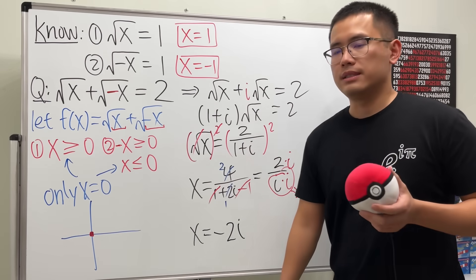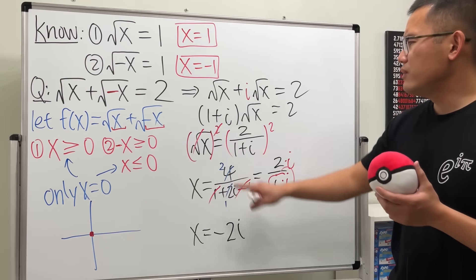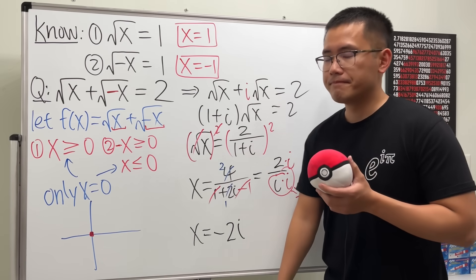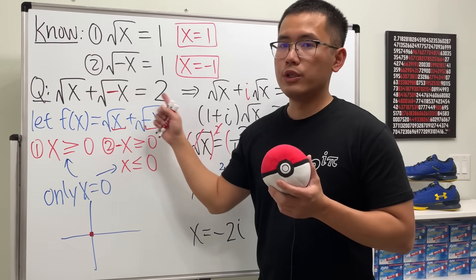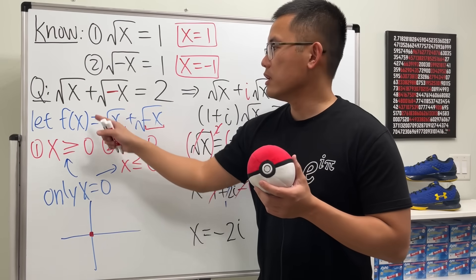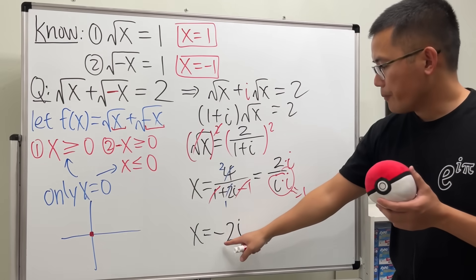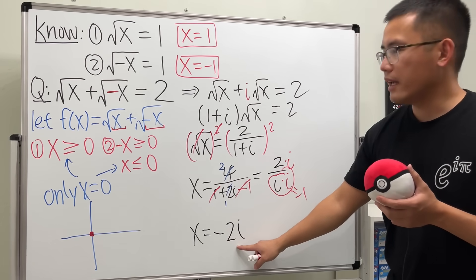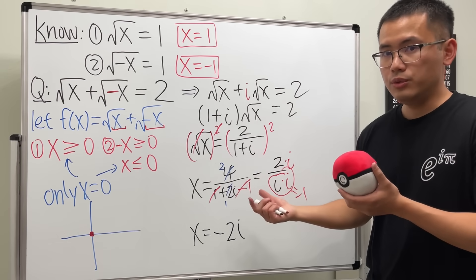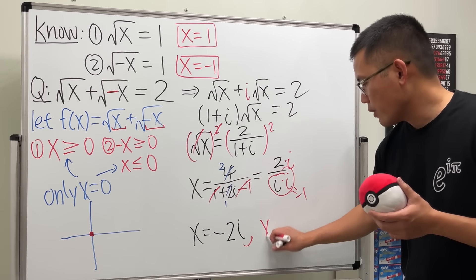But is this the only solution? No. Looking back at the original equation, it is symmetric — one input is x and the other is -x. So if x = -2i is a solution, then x = +2i must also be a solution. Therefore the two solutions are x = -2i and x = 2i.